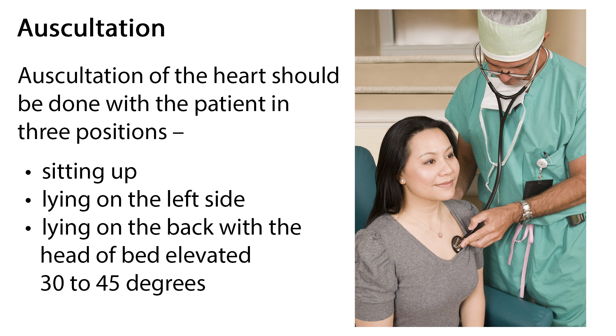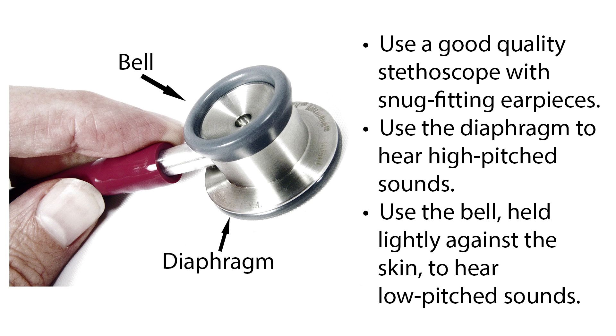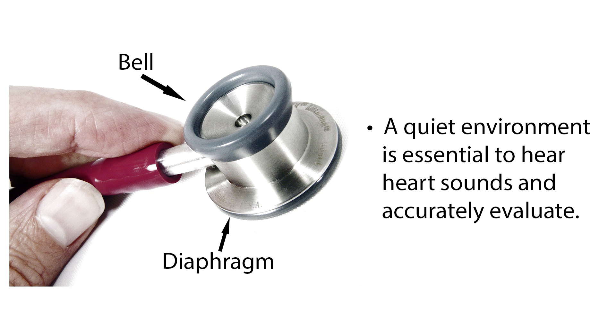Auscultation of the heart should be done with the patient in three positions: sitting up, lying on the left side, and lying on the back with the head of the bed elevated 30 to 45 degrees. Use a good quality stethoscope with snug-fitting earpieces. Use the diaphragm to hear high-pitched sounds, and use the bell, held lightly against the skin, to hear low-pitched sounds. A quiet environment is essential to hear heart sounds accurately, so turning off the TV or other background noises may be necessary. Auscultation is best performed directly on bare skin, as clothing can mimic abnormal sounds. Hair on the chest can also cause friction; this can be minimized by lightly wetting the hair before auscultation.